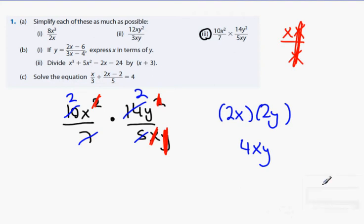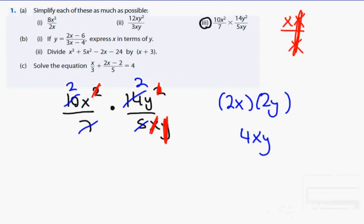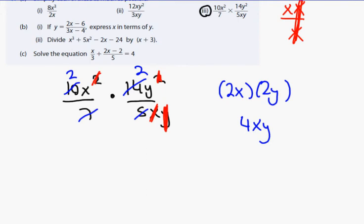Can you do cross multiplication for it? No, because there's no equal sign. Cross multiplication only happens when there's an equal sign in between it.